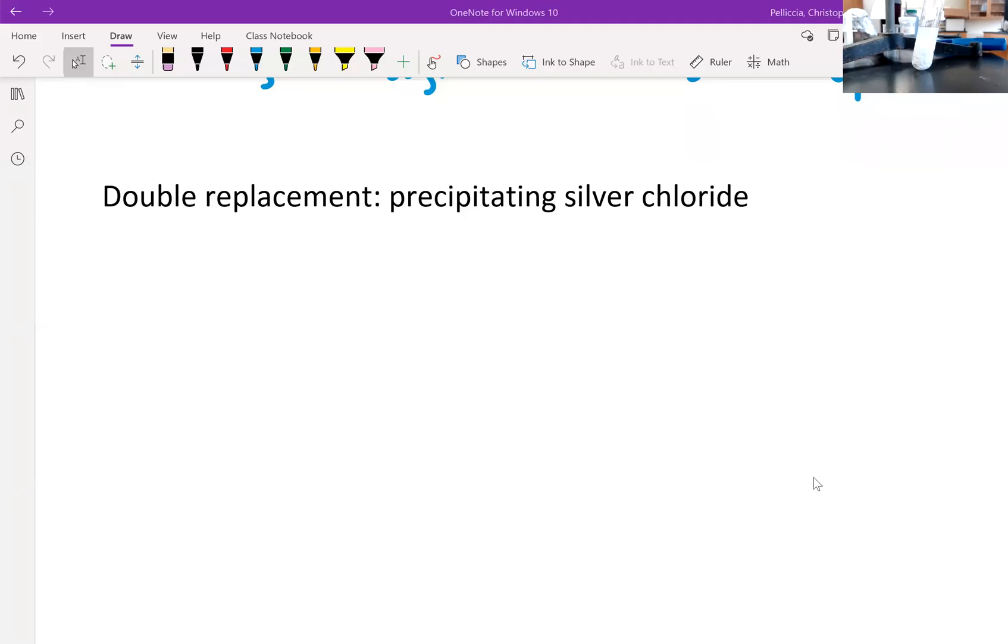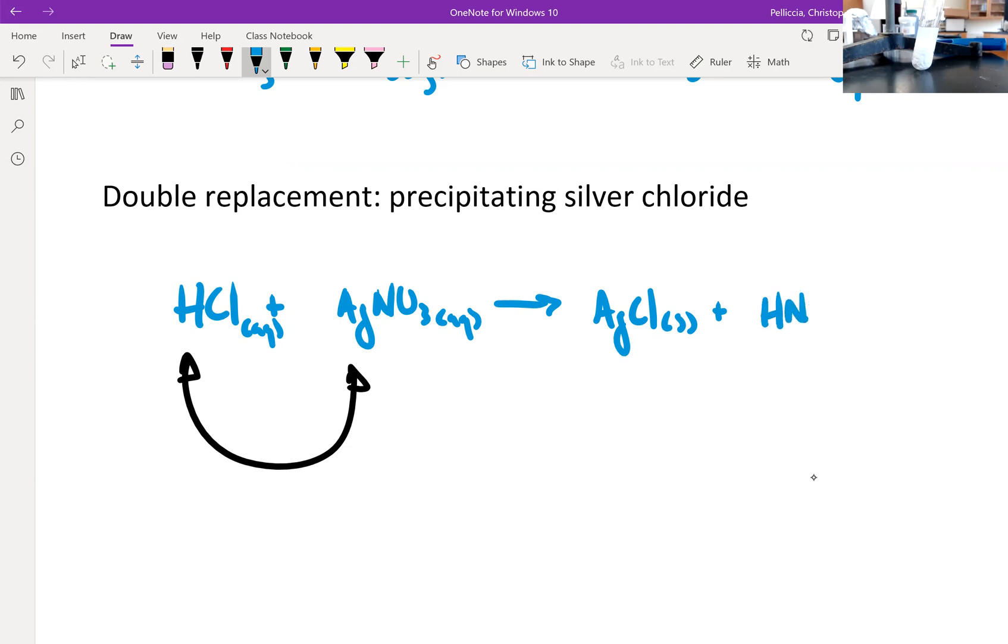So this final reaction again is a double replacement reaction. I took my two reactants, hydrochloric acid and silver nitrate, and carried out a double replacement where the hydrogen and the silver switched places. That generated for me products of silver chloride, which it turns out is the solid, and HNO3 or nitric acid.